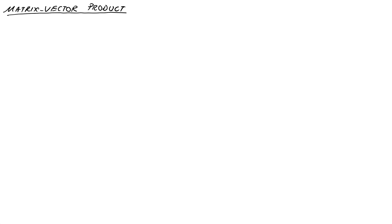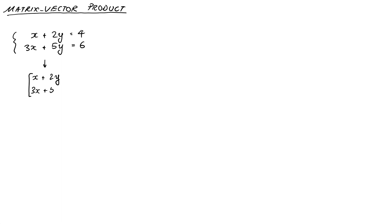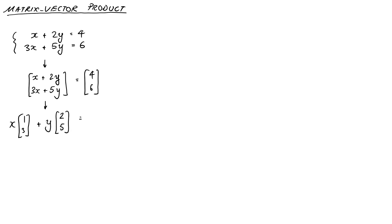So we'll start off with a system of two equations and two unknowns. These will be x plus 2y equals 4, and 3x plus 5y equals 6. Now, we can just group those two equations together in a vector if we like. So we'll have x plus 2y and 3x plus 5y on the left-hand side, and on the right-hand side, our vector will just be 4, 6. We can expand out that left-hand side as x times the vector (1, 3) plus y times the vector (2, 5), and that equals (4, 6) still.